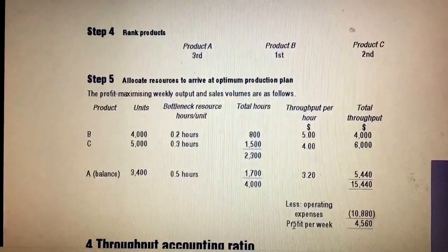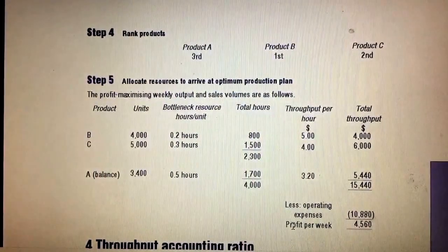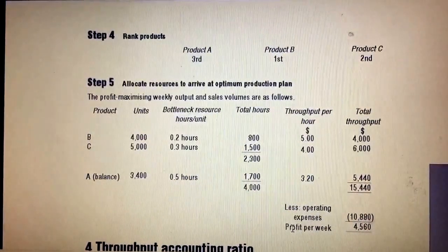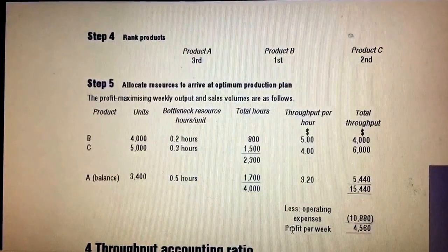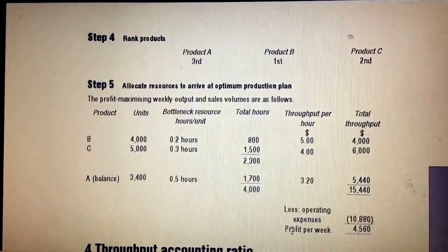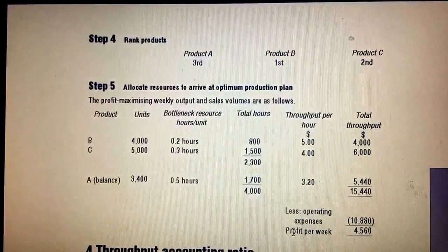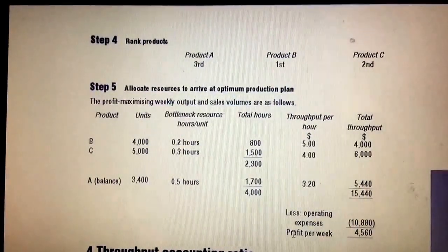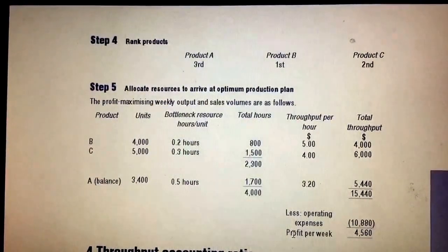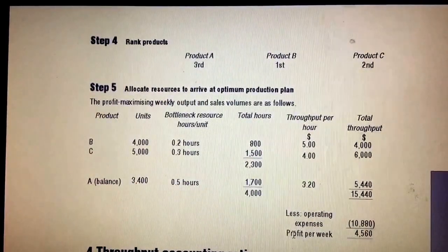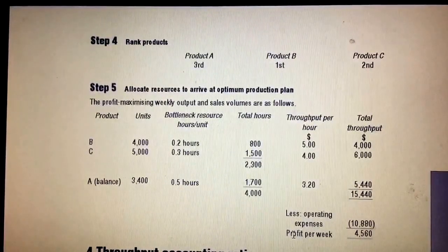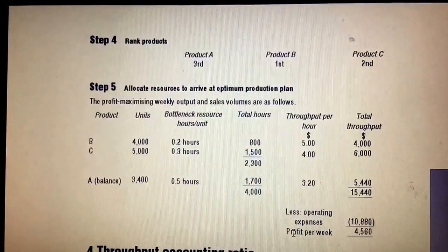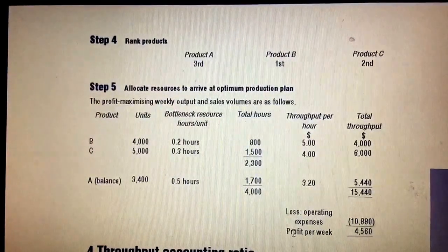So one more time, the step-based approach: Step 1 — identify the limiting factor, which is machine hours, also called the bottleneck. Step 2 — find the throughput for each product. Step 3 — calculate throughput per machine hour and rank the products. Step 4 — allocate hours to produce the product with the highest throughput per machine hour first, followed by the second and so on.